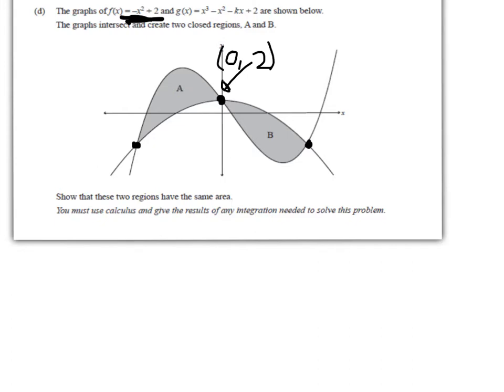For this area B, we're going to work out the top function minus the bottom one, so that will be f(x) - g(x). And over here, it's the other way around, the cubic above the quadratic. Now we have to equate f and g and solve for x.